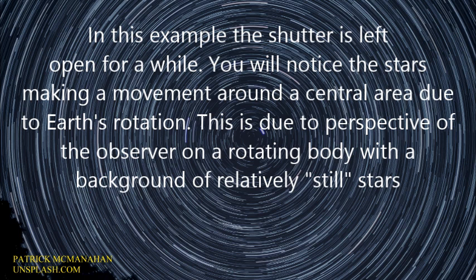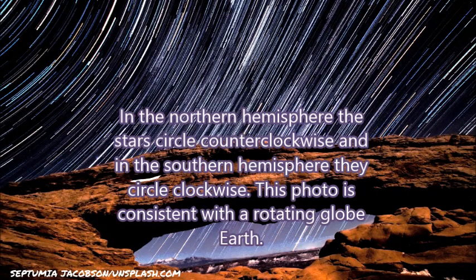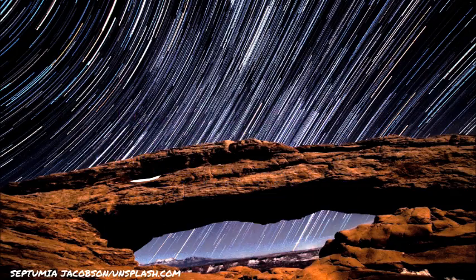In this example, the shutter is left open for a while. You will notice the star is making a movement around the central area due to the Earth's rotation. This is due to the perspective of the observer on a rotating body with a background of relatively still stars. In the northern hemisphere the stars circle clockwise, and in the southern hemisphere they circle clockwise. This photo is consistent with a rotating globe Earth.